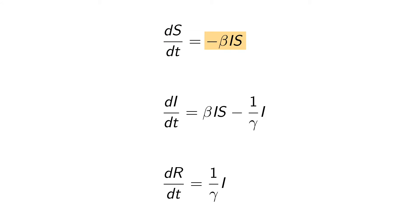You might notice that the change in susceptible population only has one term, which is negative. That's because this population can only decrease in size. You might have also noticed that this term shows up again in the change in infectious population, except here it is positive. We call this term a transition term because it represents the people who were in the susceptible population becoming infected and moving to the infectious population. This term is directly dependent on the size of both the susceptible and infectious populations, because if there are more people to infect and more people who can infect them, people will move from susceptible to infectious faster. This term is also dependent on beta, which is a variable we call the contact rate, meaning it is related to how often infected people are coming into close enough contact with others to spread the infection.